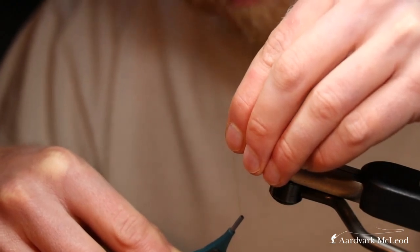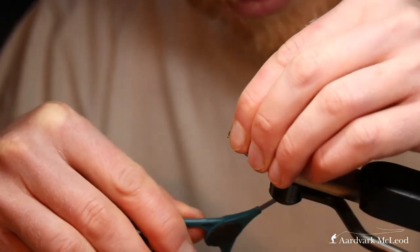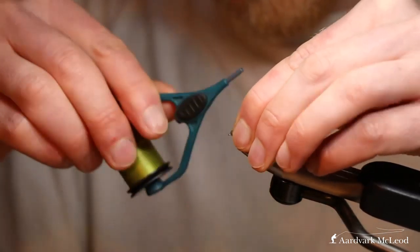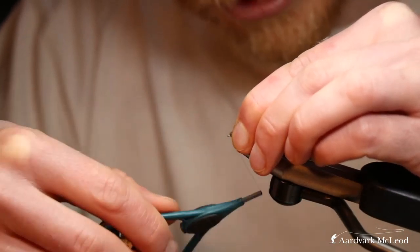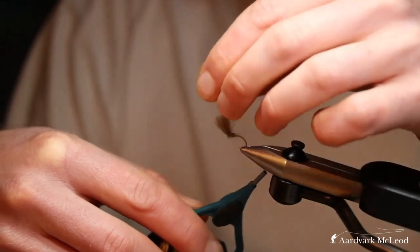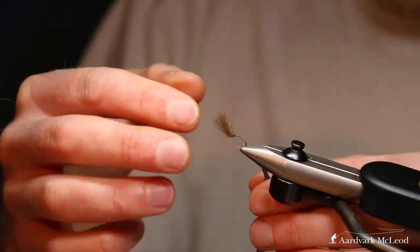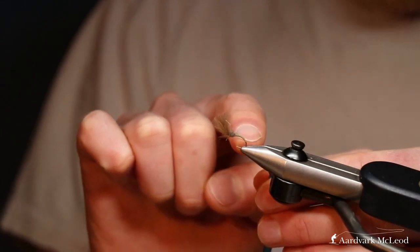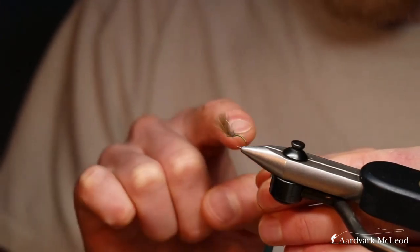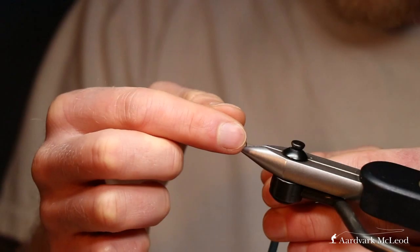To dub the thorax area. That will give you your leggy, bulky wing bud area. Bind that down. Make sure you don't dub it too tightly, so those fibres can break up and spread out. You want to make sure you've got all the turns behind the wing.